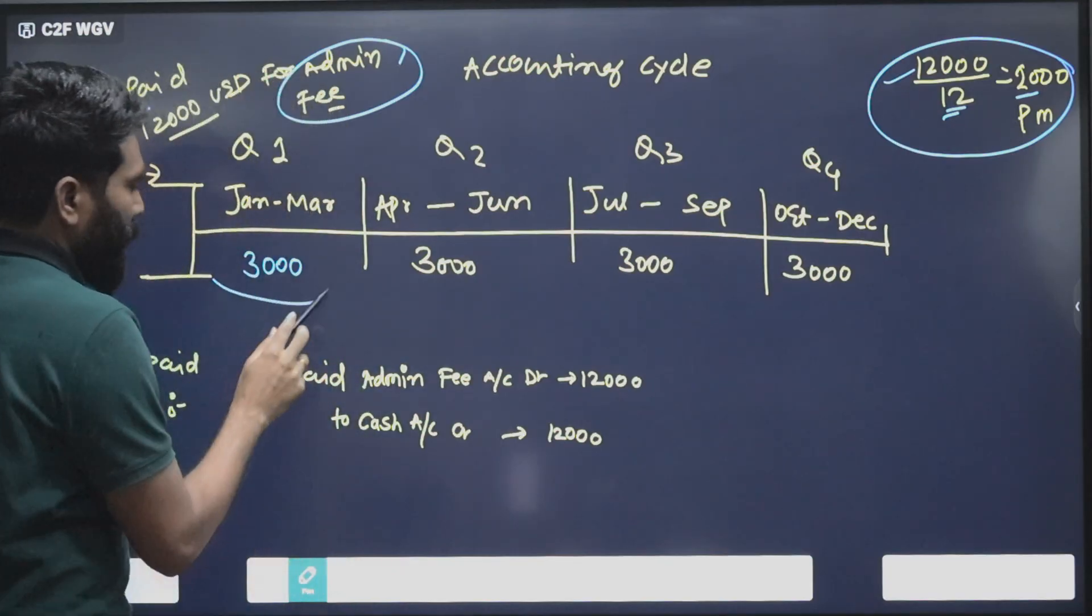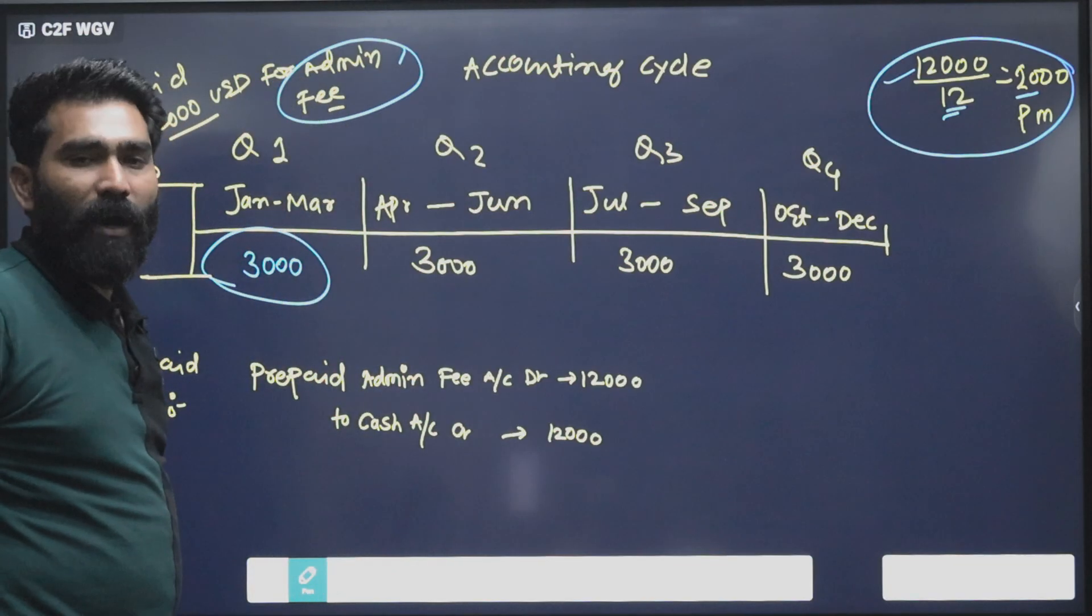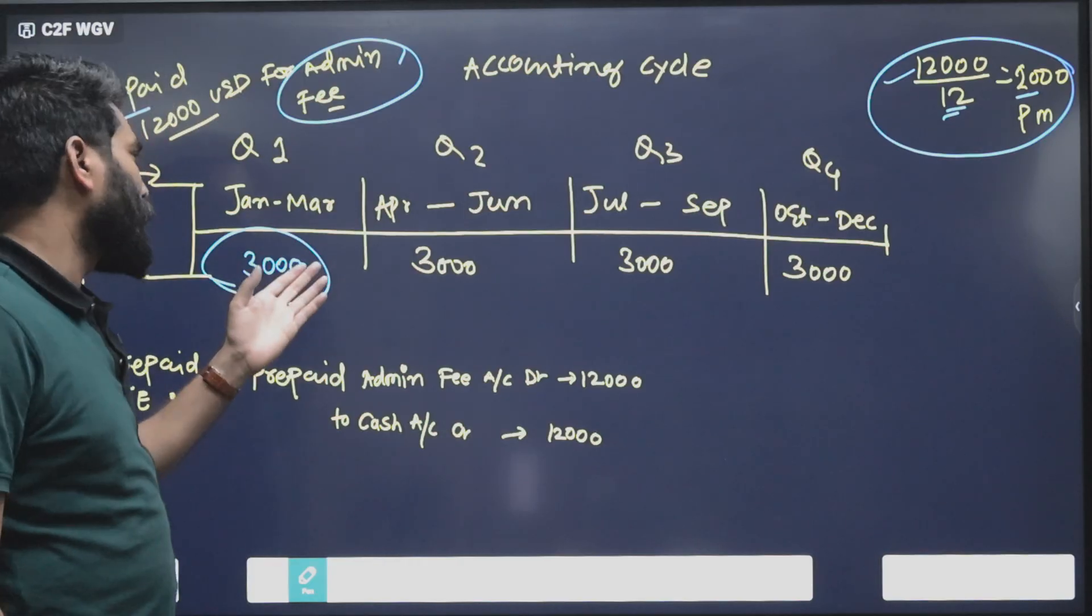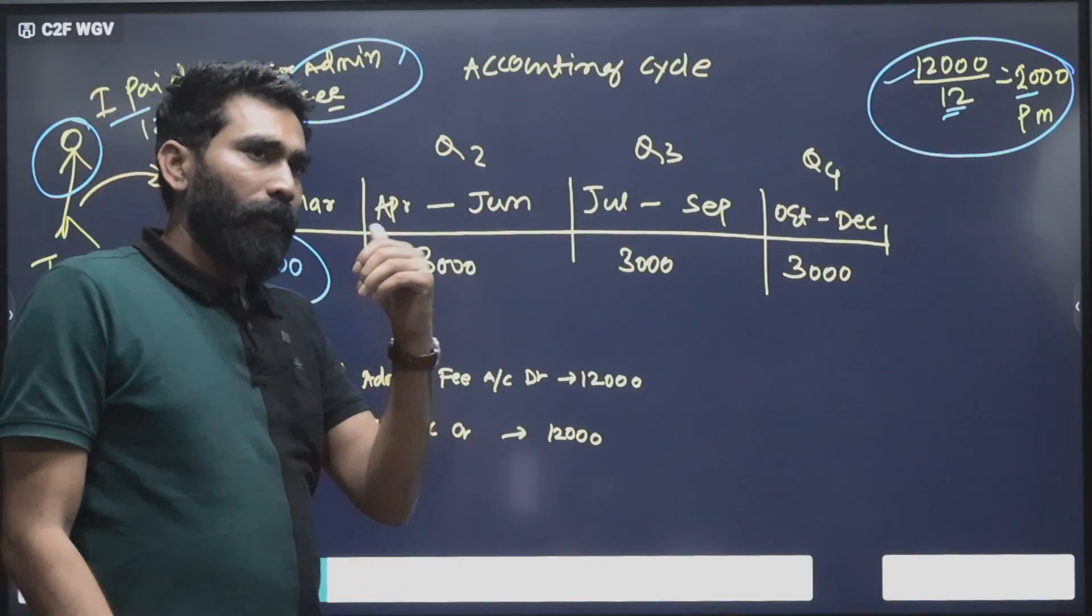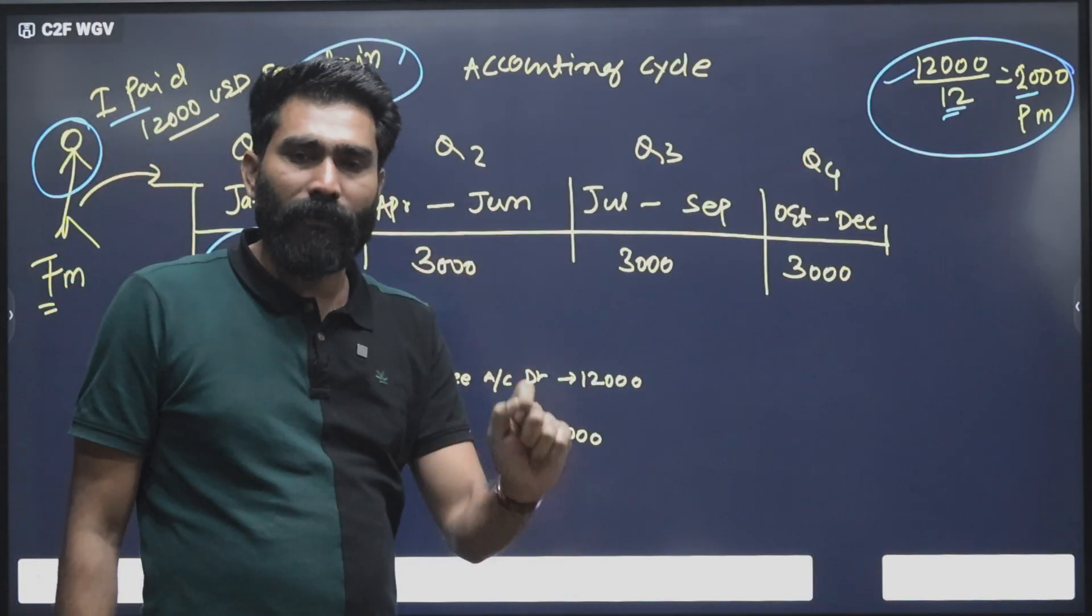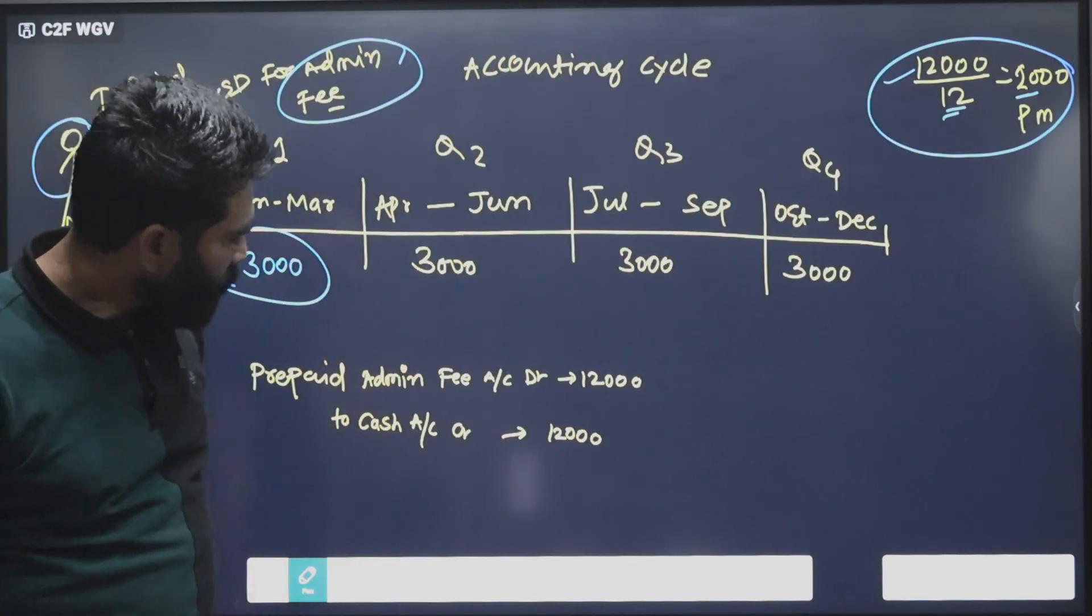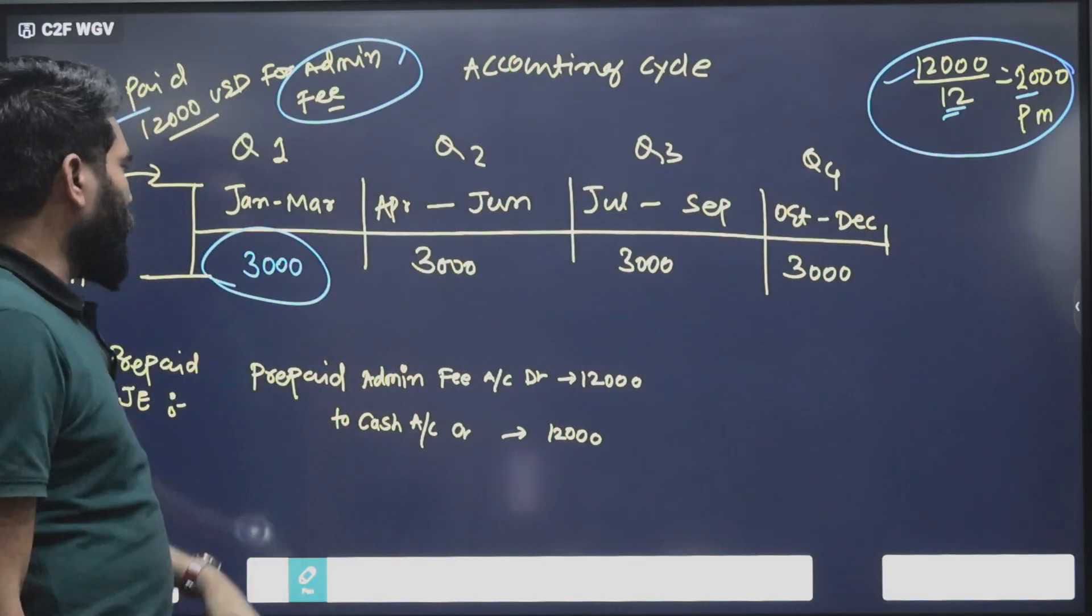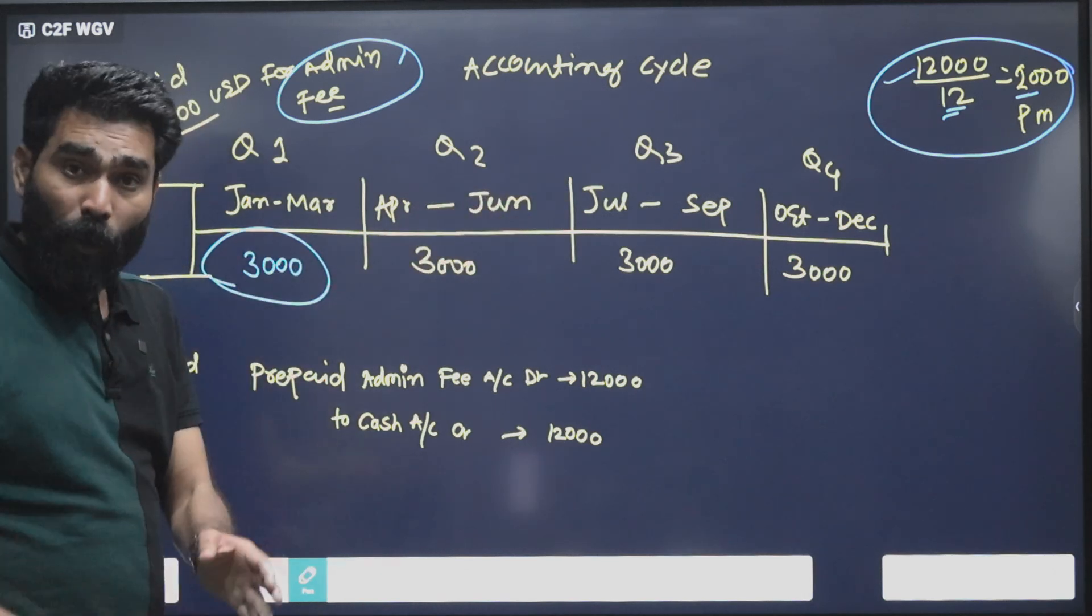Every quarter, if it's quarterly accounting, the fund accountant will perform accounting for $3,000. If it's monthly accounting, then it would be $1,000.